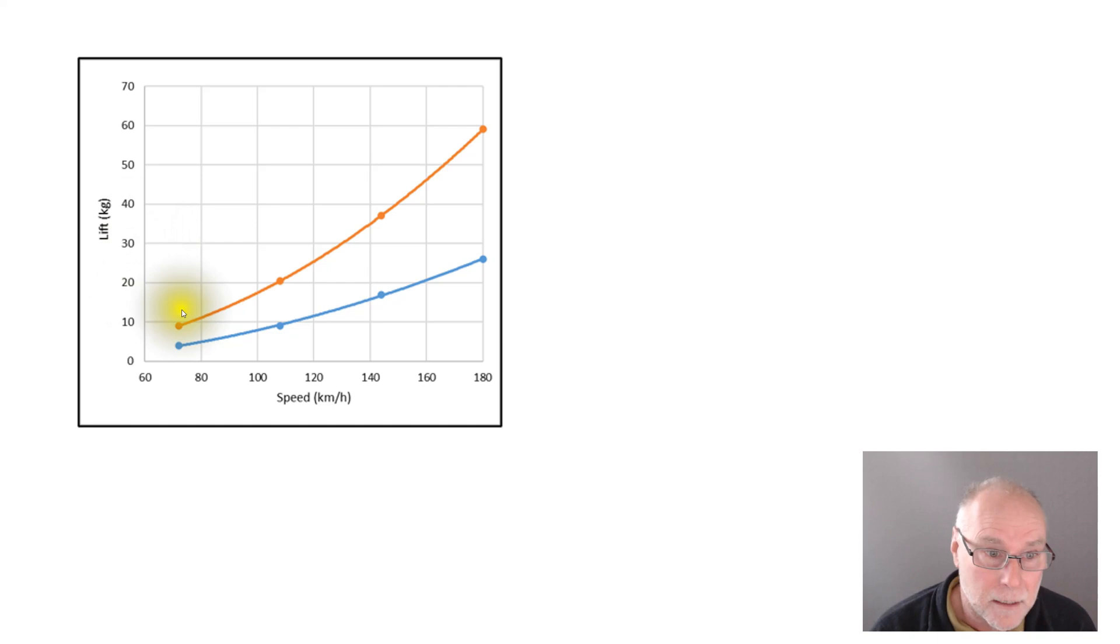But look at the back, the orange line. That really is a lot of lift. That airflow wrapping over those rear curves, we can see at, say, 160 kilometres an hour, 100 miles an hour, we have 45 kilograms of lift.